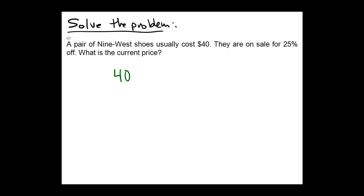They are on sale. A sale is a discount off of the original price and the sale is 25%. So effectively what we're trying to find is what is 25% of 40.